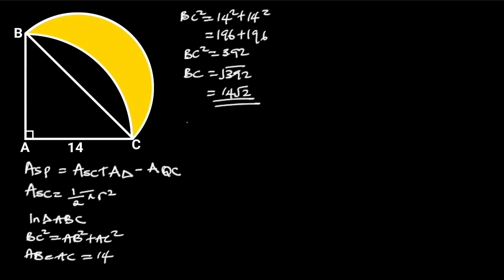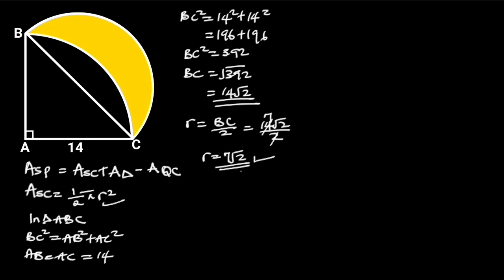Since BC is the diameter of the semicircle, the radius will be BC over 2, which is equal to 14 root 2 divided by 2, giving us 7 root 2. If we substitute the radius with 7 root 2, the area of the semicircle will be 1/2 pi times (7 root 2) squared. 7 root 2 squared is equal to 98.